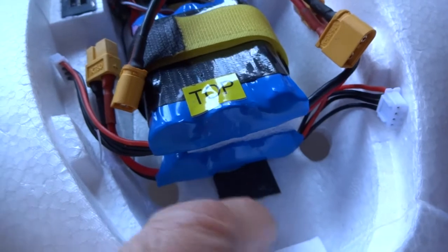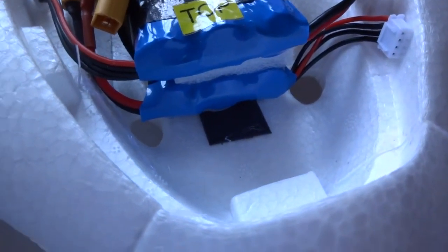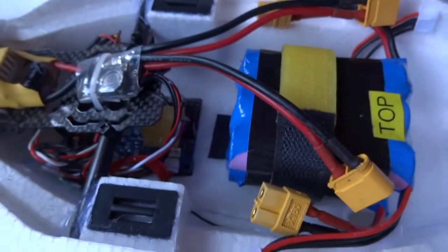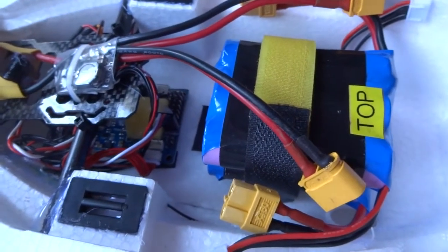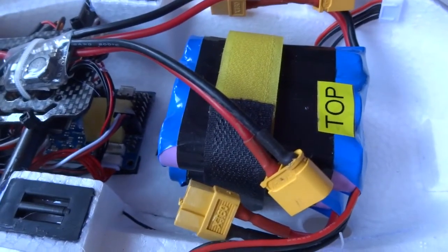You've got plenty of space in front of that to fit an extra set of cells to take the capacity up to 9 amp hours. You can see there's some space behind and in front of that battery, so you can move it backwards and forwards to get the CG right.